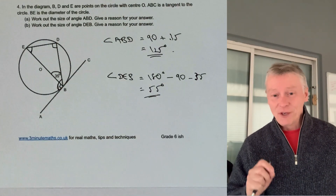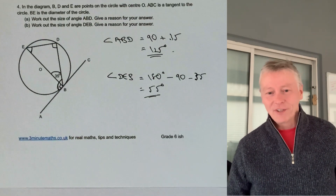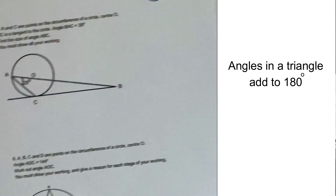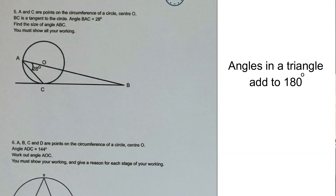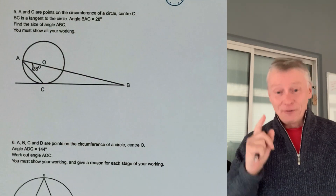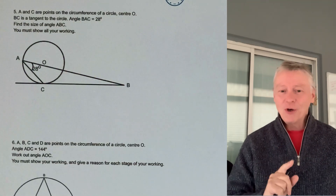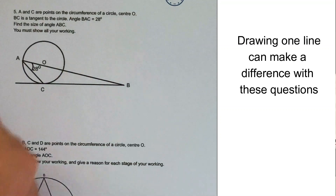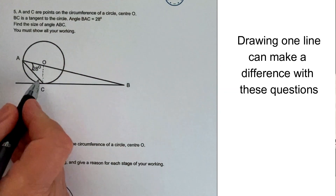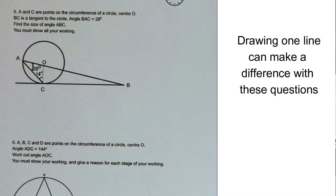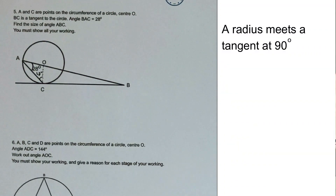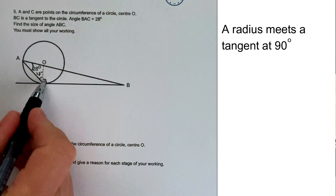Please do stop the video and have a go at some of these questions, then compare your solution. In question five, for the first time we've got a triangle that comes out of the circle itself. We know that all angles in a triangle add up to 180 degrees, and a radius meets a tangent at 90 degrees. By drawing one line we get an isosceles triangle, because OA and OC are both radii — so they're equal, making it isosceles. The radius meets the tangent at 90 degrees.